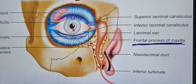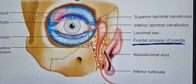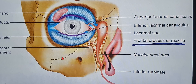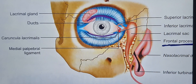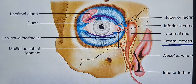The labeling shows: superior and inferior lacrimal canaliculi, the lacrimal sac, the frontal process of maxilla, the NLD and inferior turbinate along with inferior meatus. On the other side you can see the medial canthus, the medial palpebral ligament, and the lacrimal gland along with its ducts. This is the rough figure we see in the textbook.